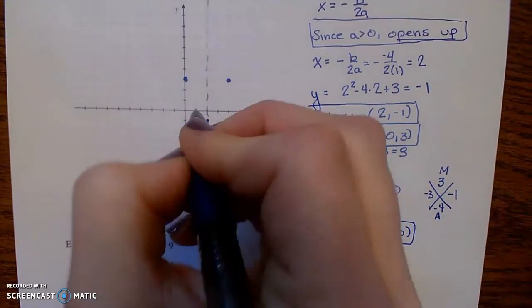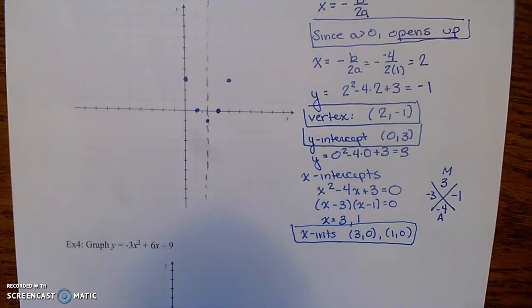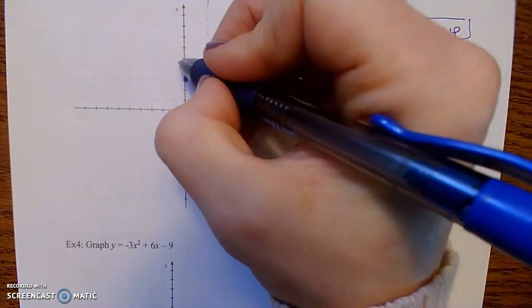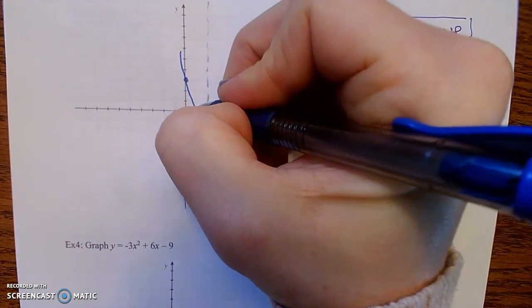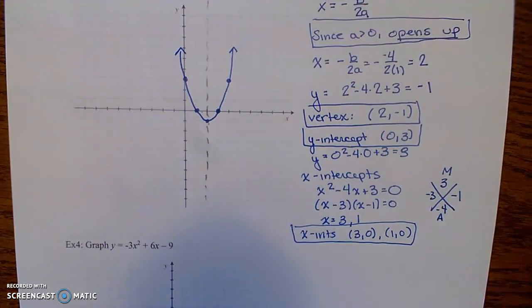So these are just some key points. So here is 3 comma 0, 1 comma 0. So now that you have those key points graphed, you can go through and connect to form a parabola.